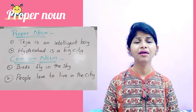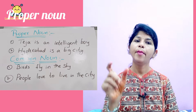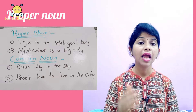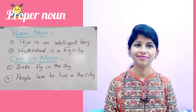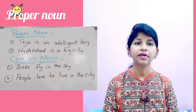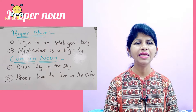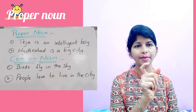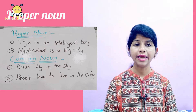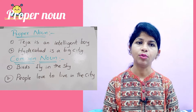The first one is proper noun. Proper noun is nothing but a proper name — the specific name of a person, animal, place, and thing. We call it a proper noun.